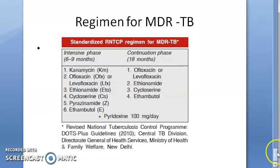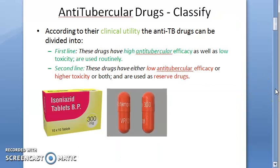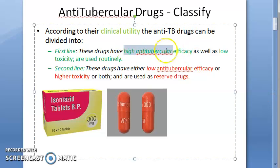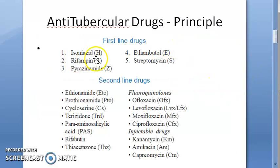To summarize: first line drugs have high anti-tubercular efficacy, low toxicity, and are used routinely — isoniazid, rifampin, pyrazinamide, ethambutol, and streptomycin. Second line drugs include ofloxacin, levofloxacin, cycloserine, and others.